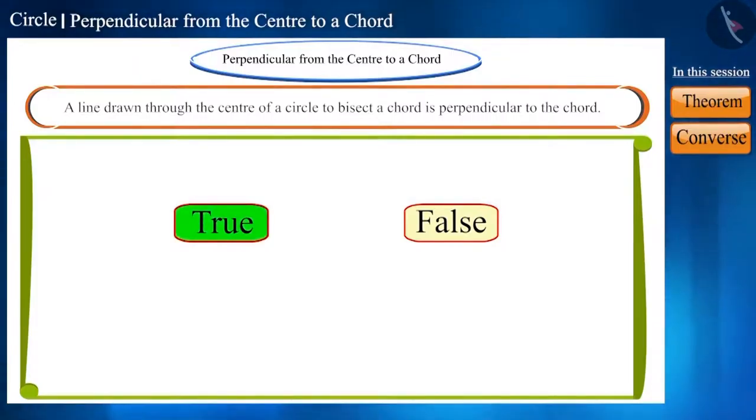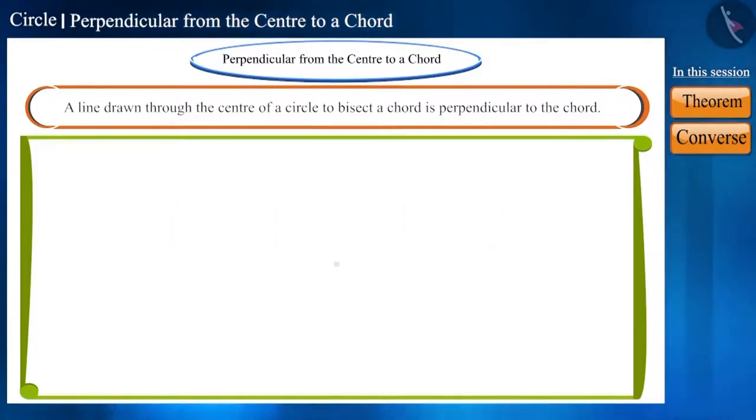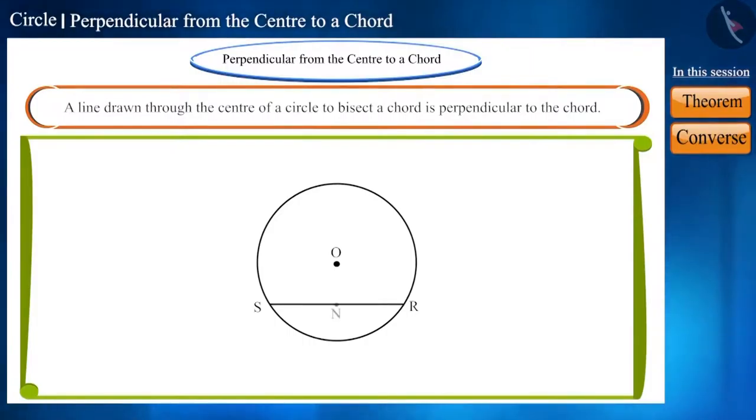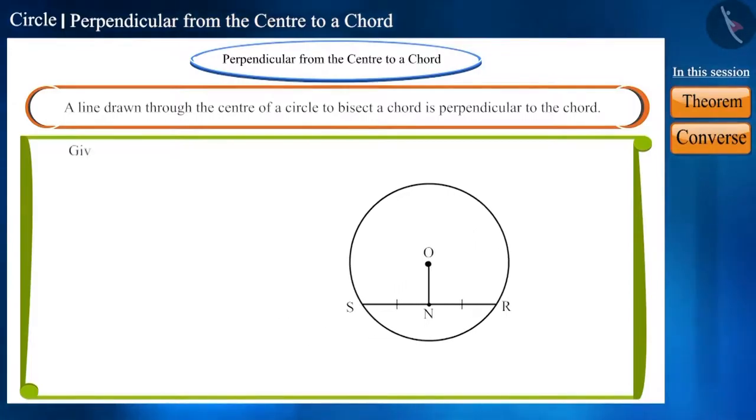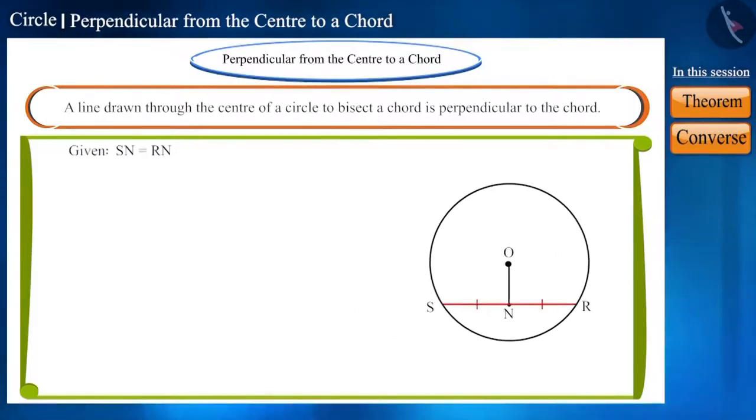Absolutely. Let's see. Draw a circle. Suppose its centre is O, in which a chord SR is drawn. A line from the centre O to the point N is drawn in such a way that it divides the chord into two equal parts. This means here SN and RN are equal. And this is given to us. We have to prove that line segment ON is perpendicular to side SR.